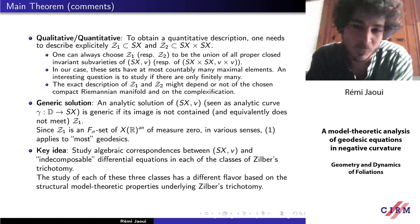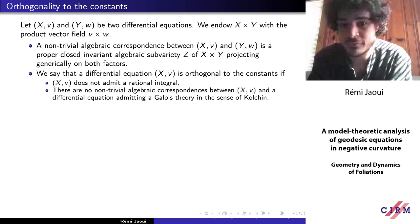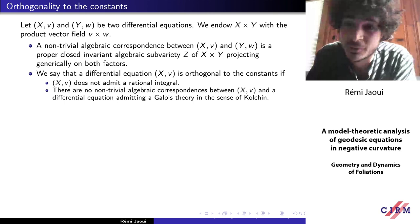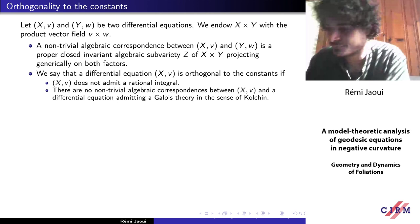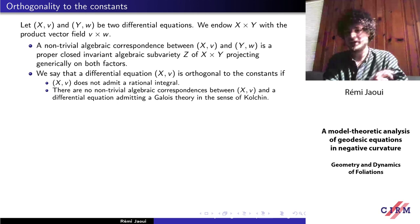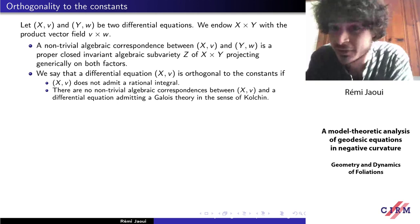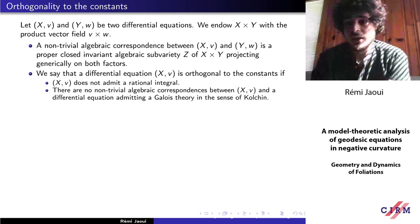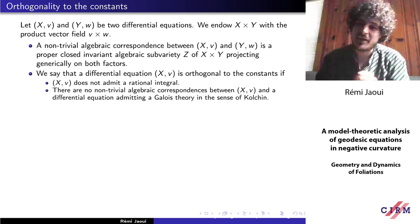Let me define what I mean exactly by an algebraic correspondence between two differential equations. All differential equations appearing are autonomous, defined as an algebraic variety with a vector field. If you have two such differential equations, you can form the product with the product vector field. A non-trivial algebraic correspondence between them is a proper closed invariant subvariety of X times Y — invariant by the product vector field — projecting generically on both factors.